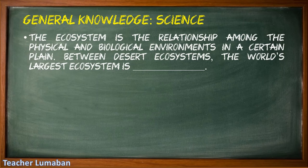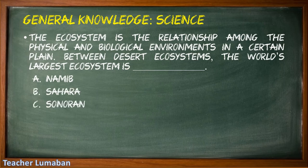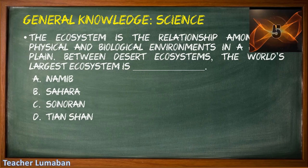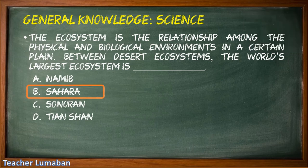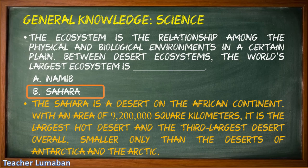The ecosystem is the relationship among the physical and biological environments in a certain plane. Among desert ecosystems, the world's largest is blank. Letter A: Namib, Letter B: Sahara, Letter C: Sonoran, Letter D: Tien Shan. The correct answer is Letter B: Sahara. The Sahara is a desert on the African continent with an area of 9.2 million square kilometers. It is the largest hot desert and the third largest desert overall, smaller only than the deserts of Antarctica and the Arctic.